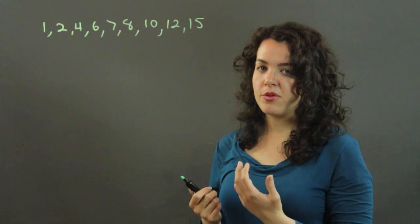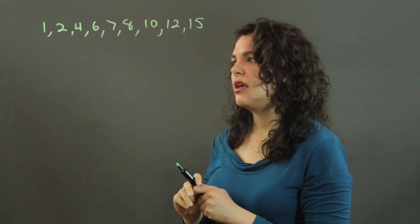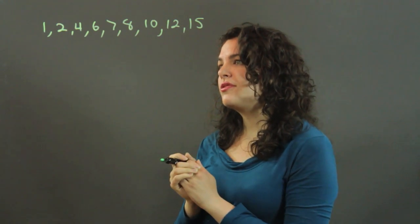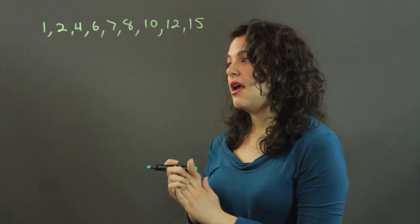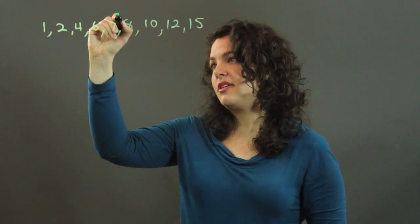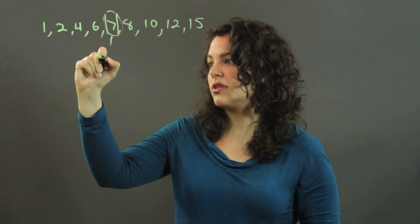So in order to find the upper quartile, we first need to find the middle quartile. And we first look to see if there is a median, just a number in the middle. And we do. We have 7 here is in the middle, so that is our middle quartile.